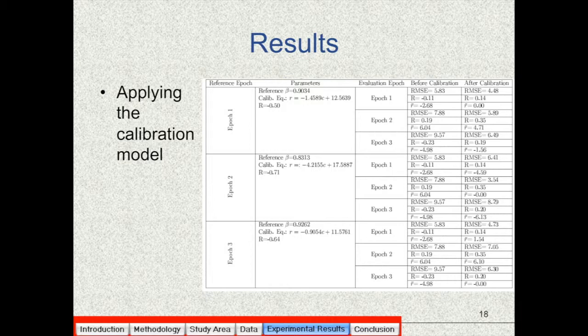There is an exception here for the case when we use the image on epoch 2, the second image as a reference image, and then we calibrate the values of soil moisture coming out of the IEM for image 1. In this case, the calibration model degrades the results.